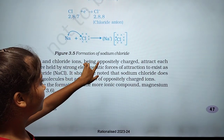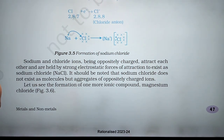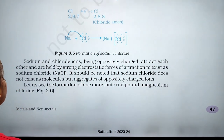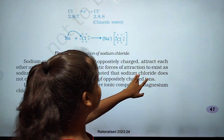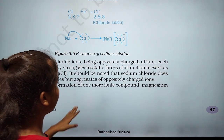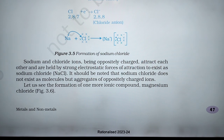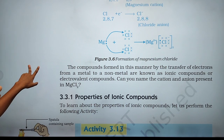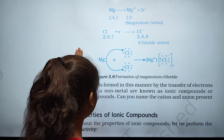Now the sodium and chloride ions are oppositely charged and are held together by a strong electrostatic force of attraction to exist as sodium chloride (NaCl). It should be noted that sodium chloride does not exist as a molecule but as aggregates of oppositely charged ions. These are called ionic compounds.